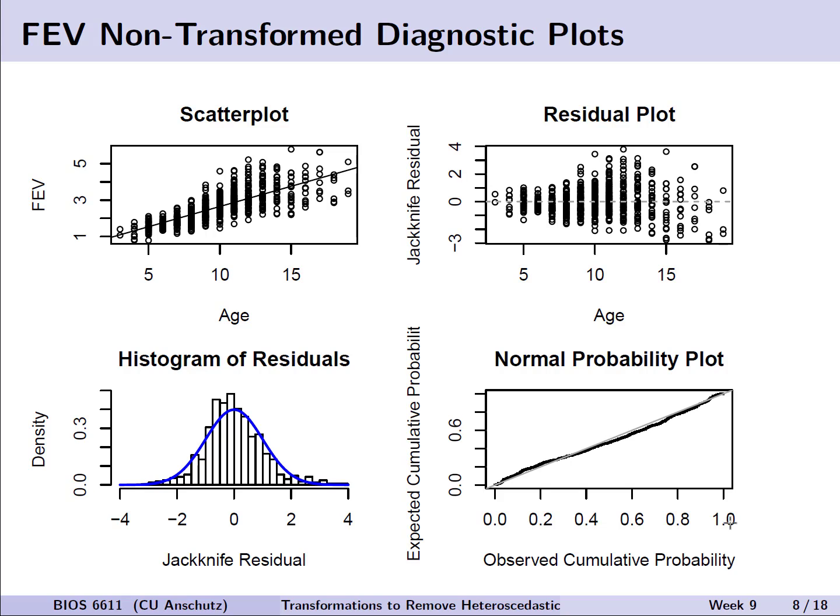A few things that we can note that are of greatest concern here is this sort of funnel pattern we see in the scatter plot and also the residual plot, where it appears that there is some unequal variances that are increasing as age gets older. This then leads us to be concerned that that assumption of homoskedasticity may be violated. We could also note as well that our normal PP plot also has a bit of a deviation around the diagonal line.